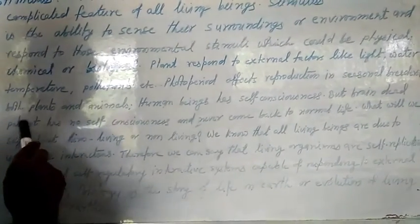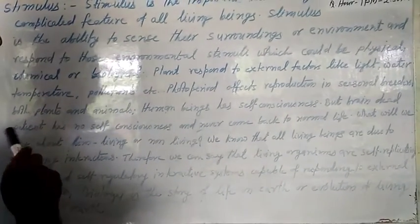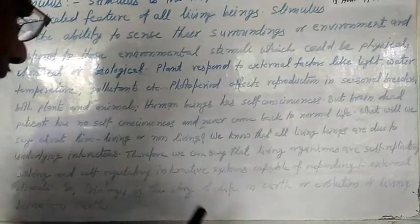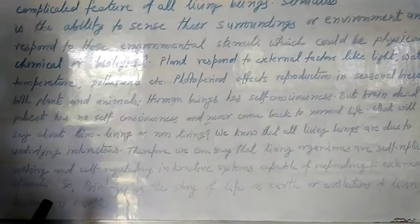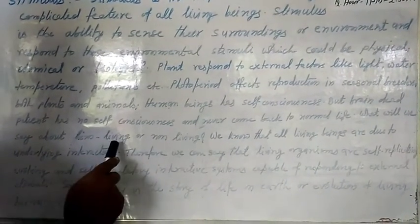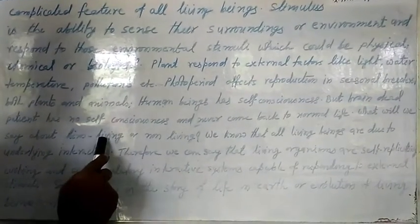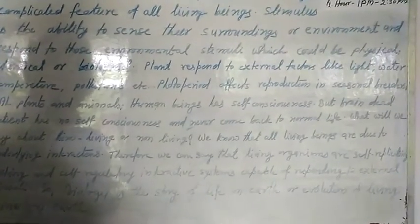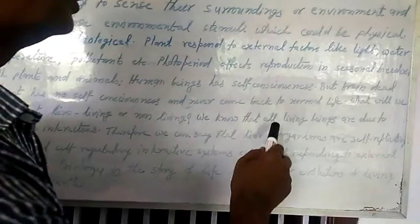If you have a brain dead patient, they will never come back to normal life. What does this mean? When you have a brain dead patient, what do you say — living or non-living? This means that living beings are defined by their underlying interactions with one another.